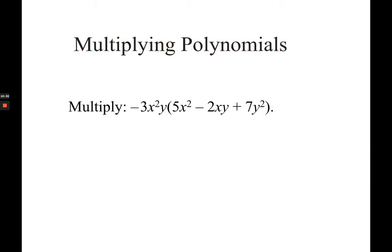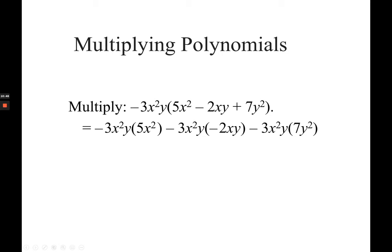Let's have more examples of multiplying polynomials with more variables. Distribute negative 3x squared y to each term. Multiply your coefficient: negative 3 times 5 is negative 15, x squared times x squared is x to the fourth power, then copy y. For the second term, negative 3 times negative 2 is positive 6, x squared times x is x cubed, y times y is y squared. The last: negative 3 times 7 is negative 21, x squared stays, y times y squared is y cubed giving negative 21x squared y cubed. Remember: distribute, multiply the coefficients, and add exponents of the same variable.